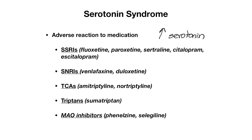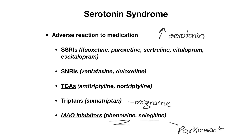Other causative medications include your SNRIs, such as venlafaxine and duloxetine; your tricyclic antidepressants, including amitriptyline and nortriptyline; as well as your triptans, such as sumatriptan, which is used in migraines; and your monoamine oxidase inhibitors, such as phenelzine and selegiline — selegiline is used in Parkinson's disease. There are more medications in each of these classes than listed here.